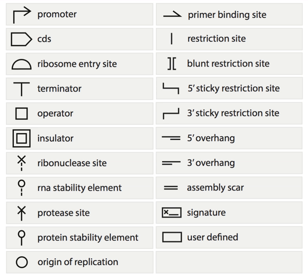The 6 bp sequence allows the reading frame to be maintained. The SCAR sequence codes for the amino acids threonine and arginine. This minor improvement allows for the formation of in-frame fusion proteins. However, arginine being a large, charged amino acid is a disadvantage to the BioFusion assembly technique, as these properties of arginine result in the destabilization of the protein by the N-end rule.